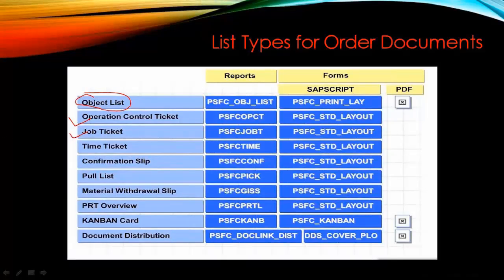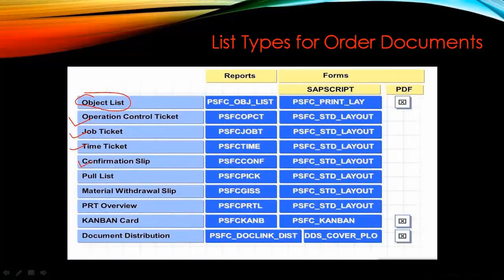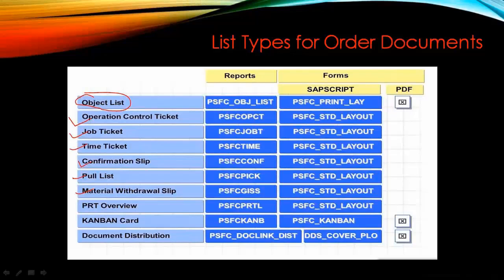We also have job tickets, time tickets — which will be discussed in detail in other topics — and confirmation slips. When you confirm an operation, SAP will print a confirmation slip for that operation. For example, once the first operation is finished and someone does the confirmation, SAP prints the confirmation slip for that operation. Other document types include pull list, material withdrawal, PRT overview, and PRT documents, all of which will be discussed in more detail.